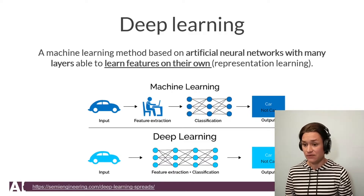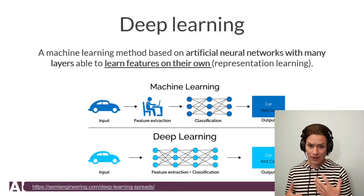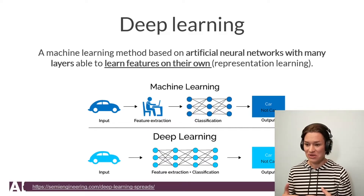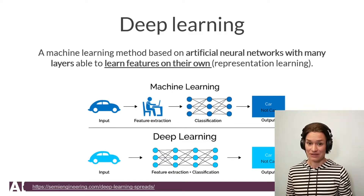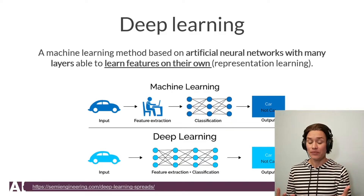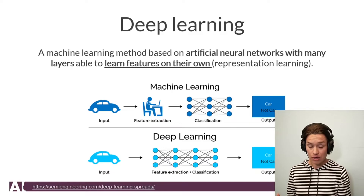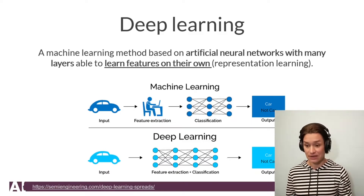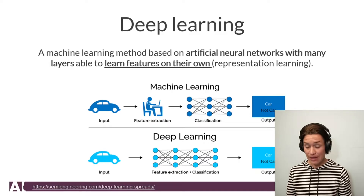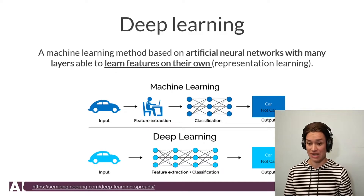If we want to classify pictures as whether they have a car or not, we ask a programmer — or program ourselves — different features of the car. Features are characteristics; for example, it has four wheels, it is blue, it has doors. In computer vision language, it's more like edges, borders, and things like that. Once we have that coded, we can ask the algorithm to classify into two categories: car or no car. Basically, a person is defining the features.